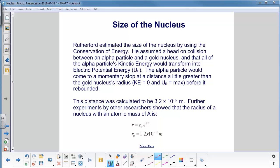Ernest Rutherford estimated the size of the nucleus by using the conservation of energy. He assumed a head-on collision between an alpha particle and a gold nucleus. Remember the gold foil experiment?